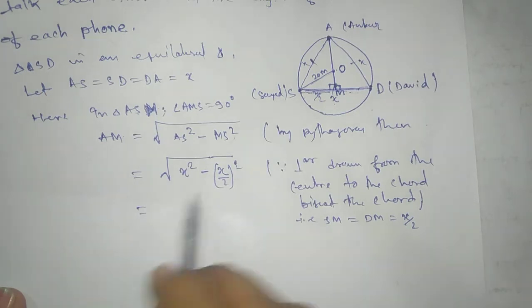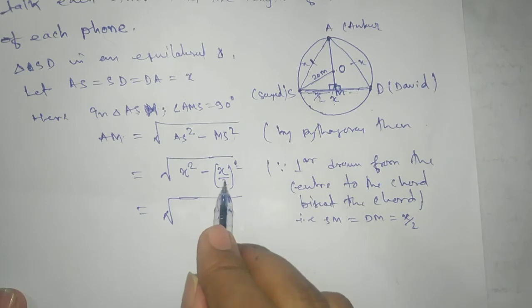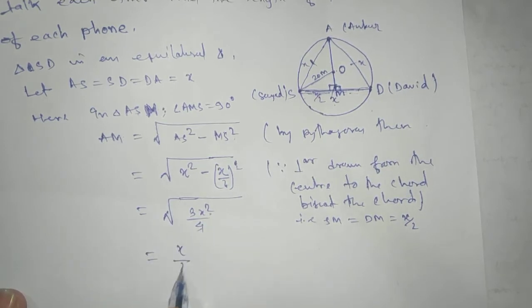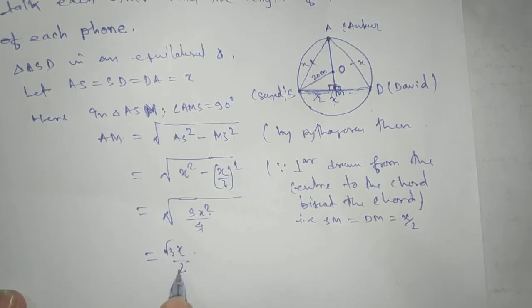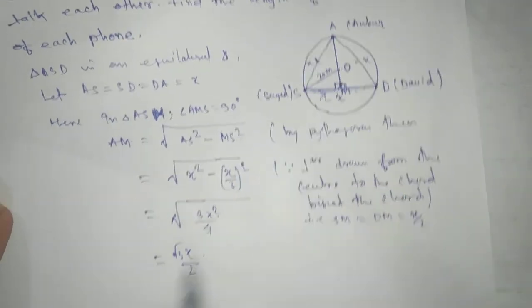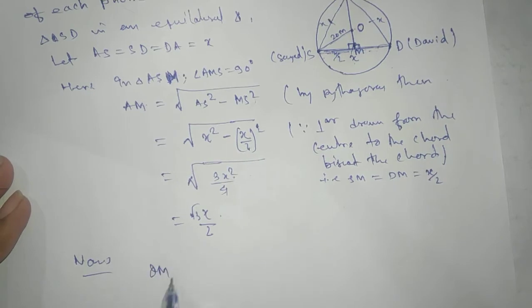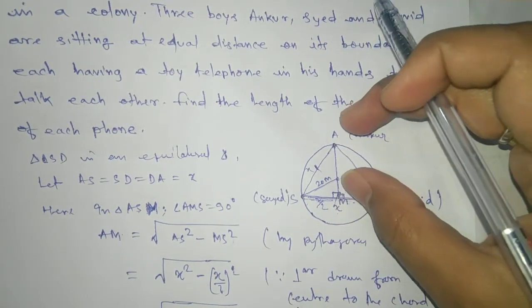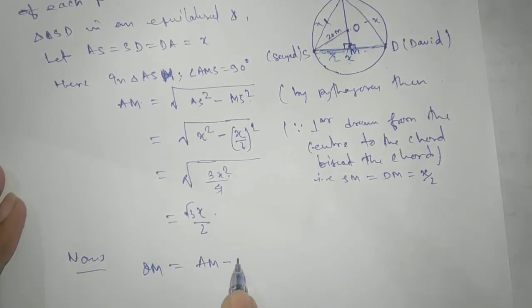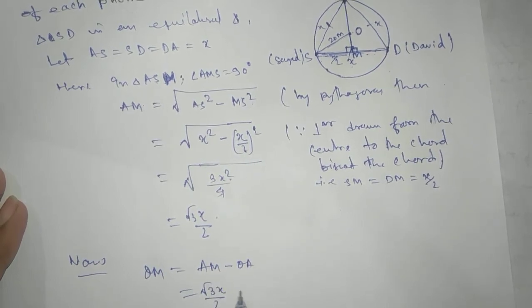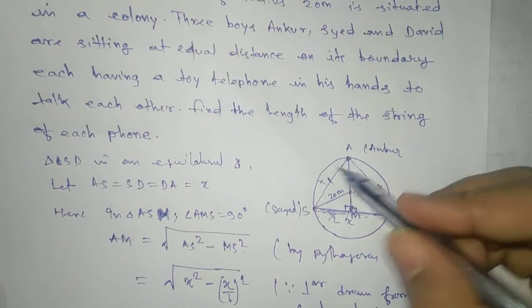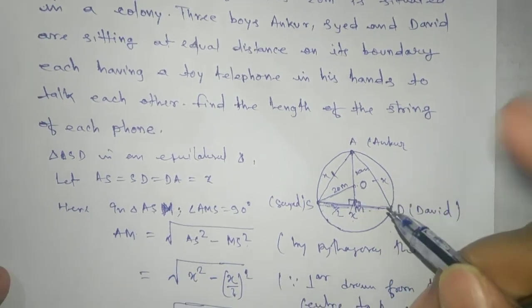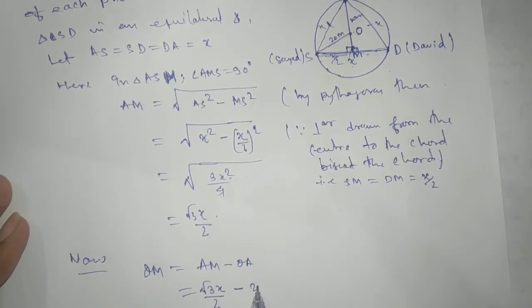Now we solve for OM. OM can be written as AM minus OA, which is (√3/2)X minus OA. OA and OS are radii, and radii of a circle are equal to one another. OA equals 20. So OM equals (√3/2)X minus 20.